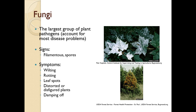Fungi are the largest group of plant pathogens - most of our disease problems will be here. Signs include filamentous structures such as mycelium and hyphae, or spores. Symptoms you may see include wilting, rotting, leaf spots, damping off, and distorted or disfigured plants.